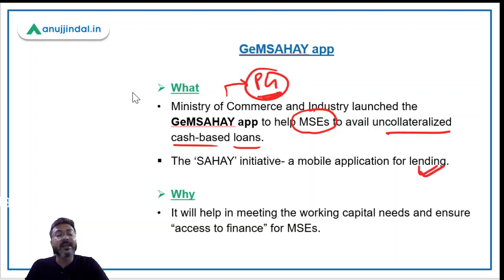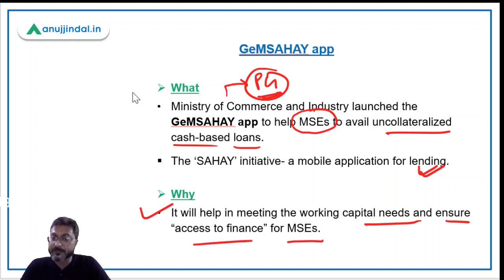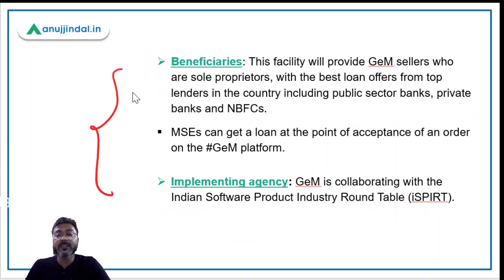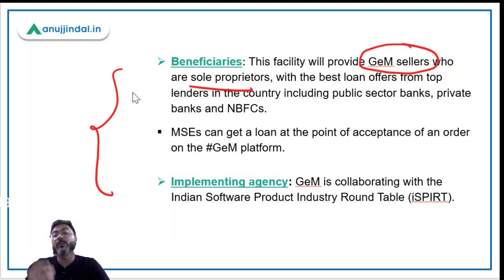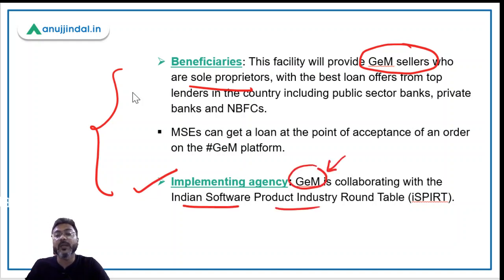It is a mobile app launched for lending purposes — specifically for medium and small enterprises. It will help in meeting working capital needs and ensure access to finance for them. The beneficiaries will be GEM sellers who are sole proprietors on the Government e-Marketplace. The implementing agency is Government e-Marketplace, which will collaborate with the Indian Software Product Industry Roundtable, a tech-based think tank.